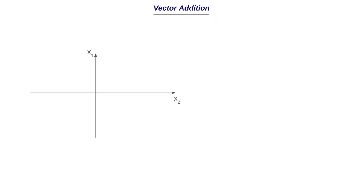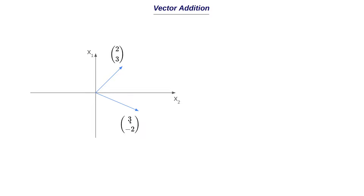Let's say we have two coordinate axes, x1 and x2 — think of these as two features in your input data, like age and gender of a person for a diabetes prediction model. We have a first vector of (2, 3) and a second vector of (3, -2). These are the coordinates of the two vectors, represented with arrows. So this vector has coordinate (2, 3) and this one has (3, -2). Now we need to add these vectors.